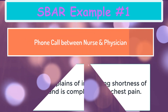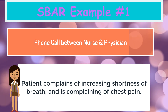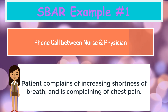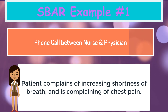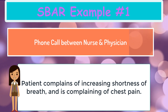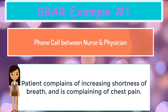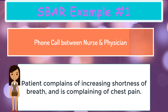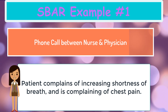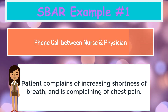Here is our first SBAR example — a phone call between a nurse and a physician. The patient complains of increasing shortness of breath and chest pain. The nurse says: 'Hello Dr. Smith, this is Margarita, the registered nurse calling from ABC Hospital about your patient Maria Smith. Here's the situation: Mrs. Smith is having increasing dyspnea and is complaining of chest pain. The supporting background is that she had a total knee replacement two days ago and about two hours ago began complaining of chest pain. Her pulse is 120, respirations are 22, blood pressure is 130 over 54. She is restless, short of breath, and her pulse ox on room air is 92%. My assessment is that she may be having a cardiac event or a pulmonary embolism. I recommend that you see her immediately and that we start her on O2 STAT. Do you agree?'